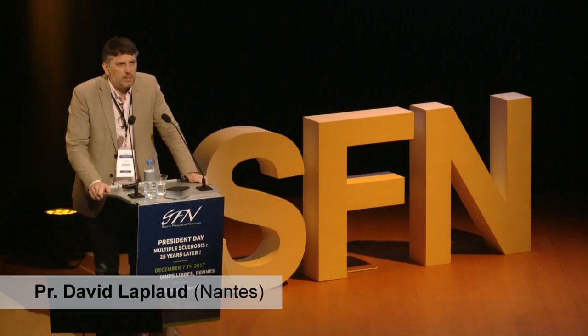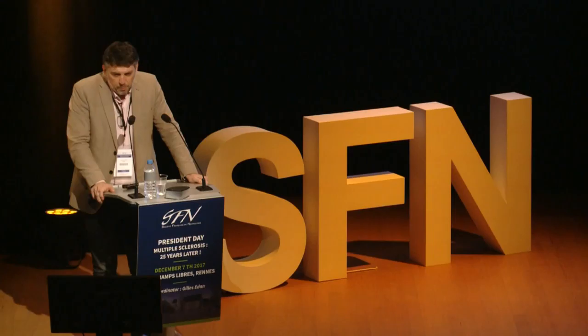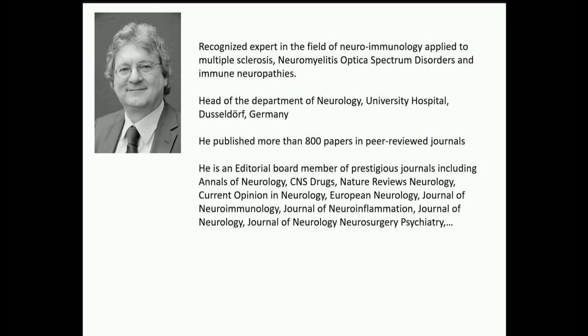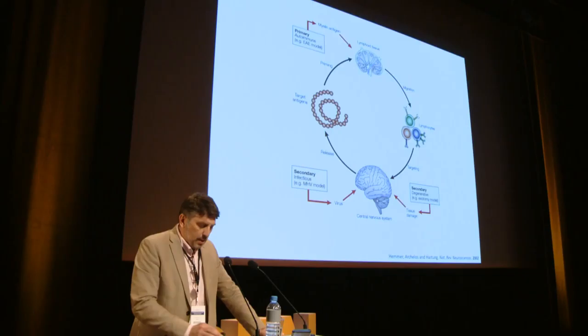Professor Hartung is a leading expert in neuroimmunology applied to multiple sclerosis and peripheral inflammatory neuropathies. He is head of the Department of Neurology at the university hospital in Düsseldorf and has published more than 800 papers in peer-reviewed journals, over 100 book chapters, and is a member of the editorial boards of several prestigious journals.